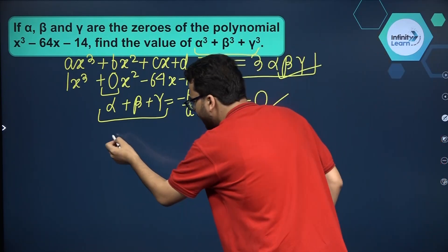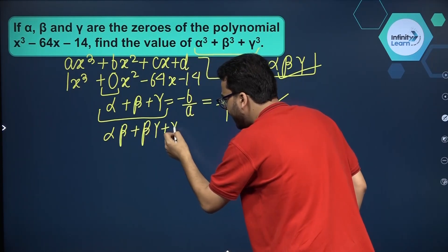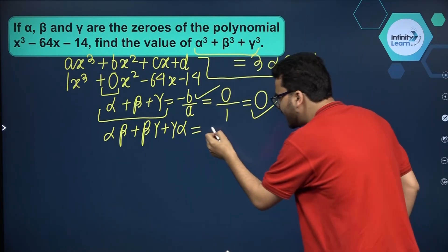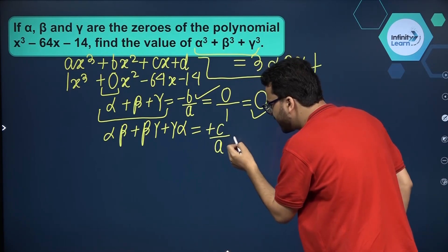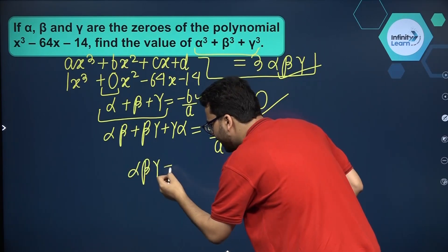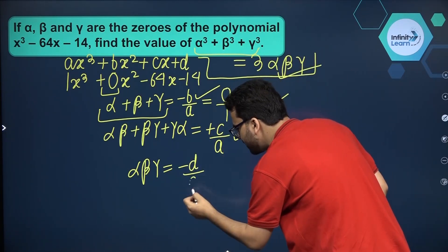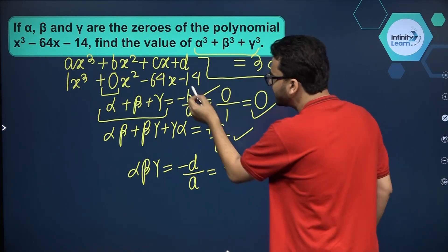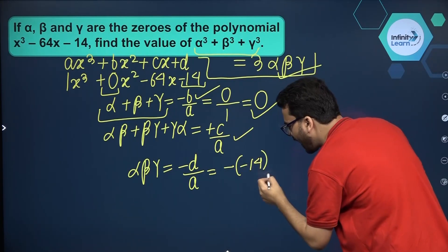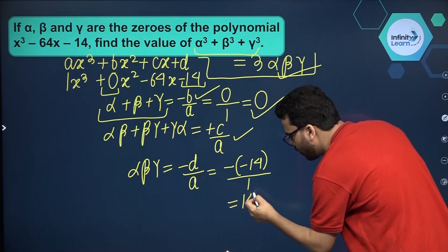Now by Vieta's formula, alpha·beta·gamma is equal to minus d by a. So that is minus and d over here is minus 14, so that will be minus of minus 14. And a over here is 1, so therefore alpha·beta·gamma is equal to 14.